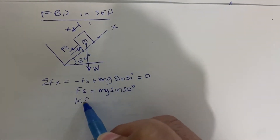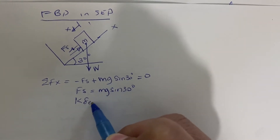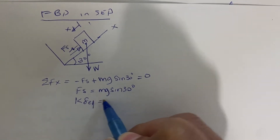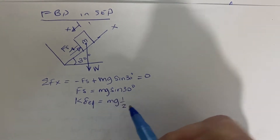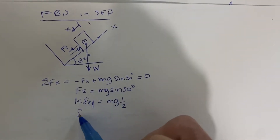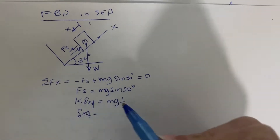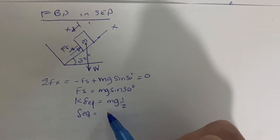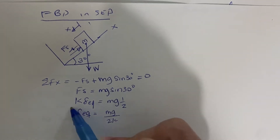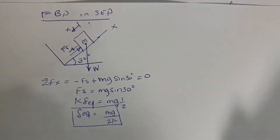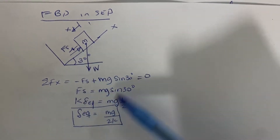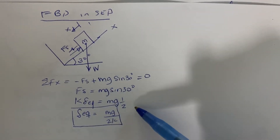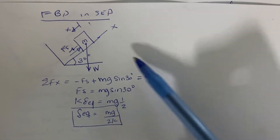In static equilibrium, the stretch δ_st is defined by this variable, and since mg sin 30° equals mg/2, we can find the static deflection: δ_st = mg/(2k). This is the initial stretch of the spring that keeps the system balanced with no movement.